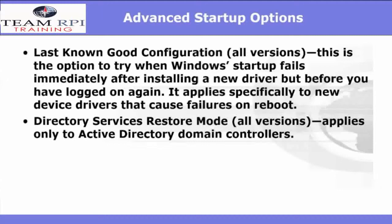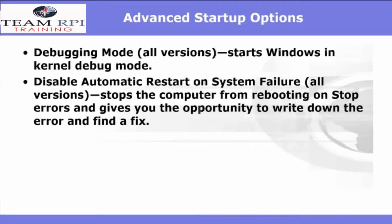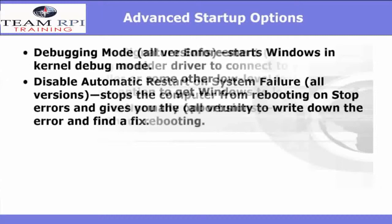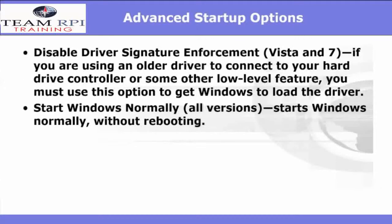Next you have Directory Services Restore Mode, available in all Windows versions. It applies only to an Active Directory domain controller. Next you have Debugging Mode, also available in all Windows versions — it will start Windows in Kernel Debug Mode. Next you have Disable Automatic Restart on System Failure, available with all Windows versions. It stops the computer from rebooting on stop errors and gives you the opportunity to write down the error so you can try to find a fix for it. In Windows Vista and Windows 7, you have the option to Disable Driver Signature Enforcement. If you're using an older driver to connect to your hard drive controller or some other low-level feature, you must use this option to get Windows to load the driver. And of course, you have the option to start Windows normally.